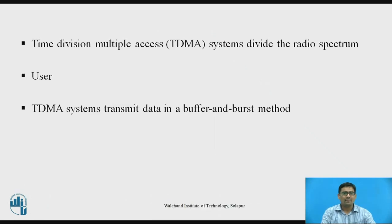The Time Division Multiple Access, i.e. TDMA system, divides the radio spectrum into time slots. In each slot, only one user is allowed to either transmit or receive. As shown in figure 1, each user occupies a cyclically repeating time slot, so a channel may be thought of as a particular time slot that reoccurs every frame, where n time slots comprise a frame. TDMA systems transmit data in a buffer-and-burst method, thus the transmission for any user is non-continuous.